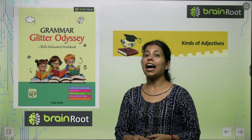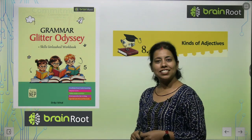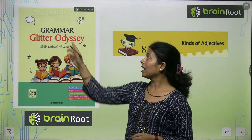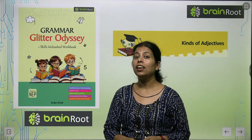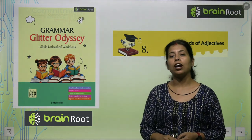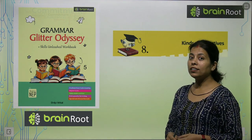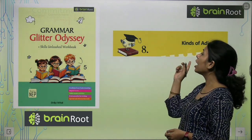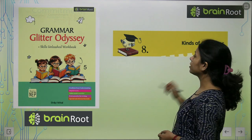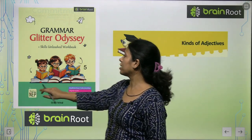Hello young champs, I am your trainer Pooja. Today we will start a new chapter of our book Grammar Glitter Odyssey of Grade 5 by Brain Road. It's a product of Amit Publication House. So friends, today we will start our new chapter — Kinds of Adjective.